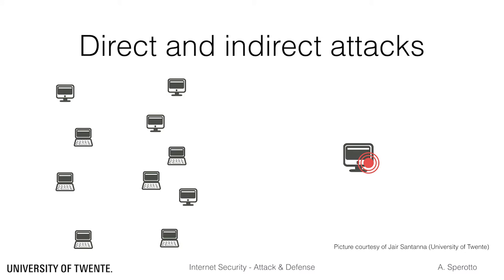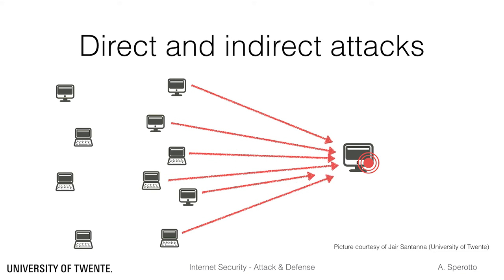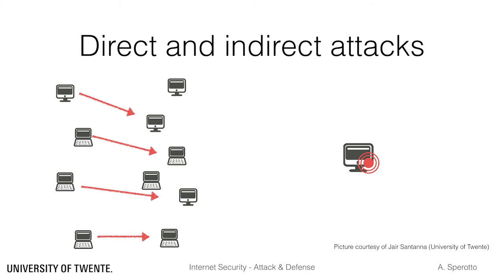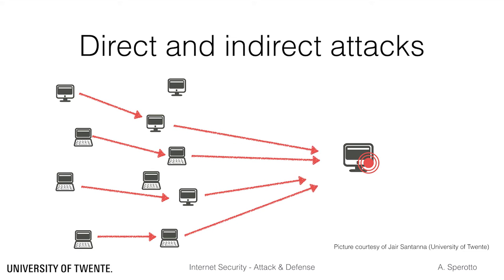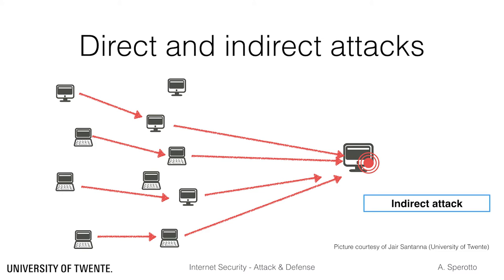DDoS attacks can be direct, indicating that a set of malicious hosts directly generate traffic that is sent to the target. We talk instead of indirect attacks when malicious hosts use an intermediary set of hosts to generate attack traffic. These scenarios include several types of attacks. For example, the secondary set of hosts can be bots in a botnet that gets instructed by the command and control to start an attack. Another example can be legitimate, non-infected hosts, for which the malicious hosts are able to exploit some software or protocol characteristic for malicious use. We will see an example of this when we talk about reflection.